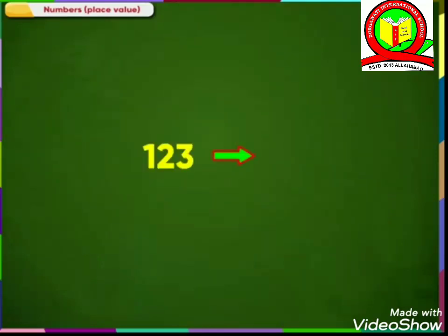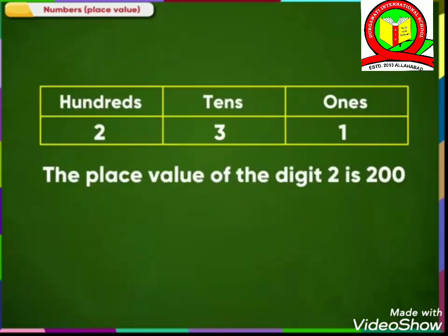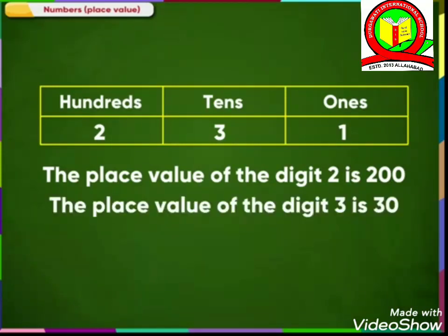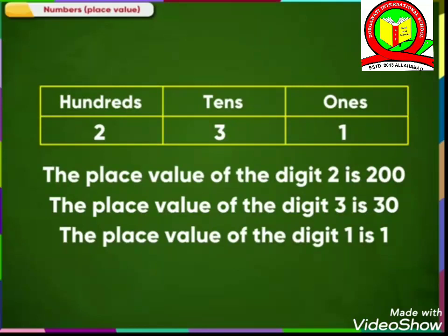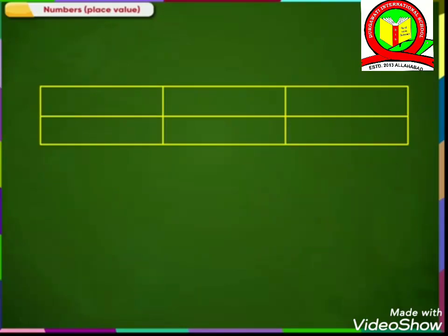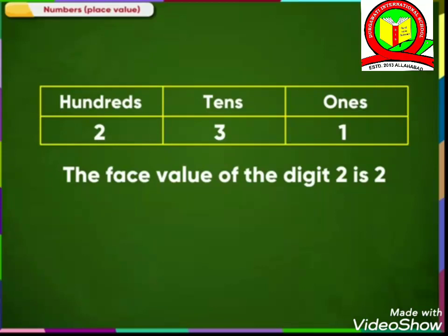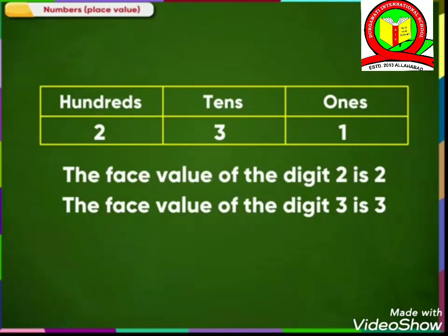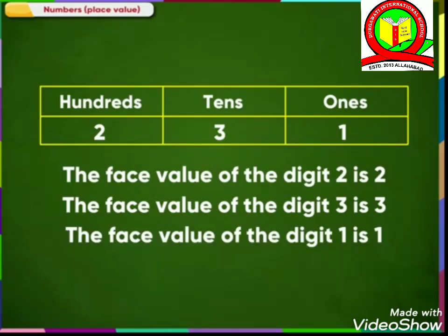If we interchange the places of the digits in this number, then the place value of the digit 2 is 2 hundreds, that is 200. The place value of the digit 3 is 3 tens, that is 30. The place value of the digit 1 is 1. The face value of the digit 2 in the number 231 is 2. The face value of the digit 3 in the number 231 is 3. The face value of the digit 1 in the number 231 is 1.